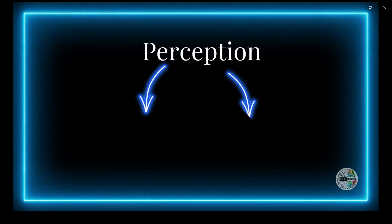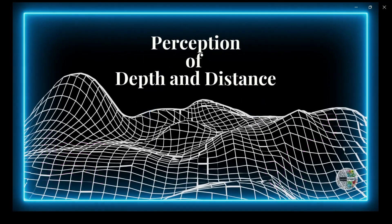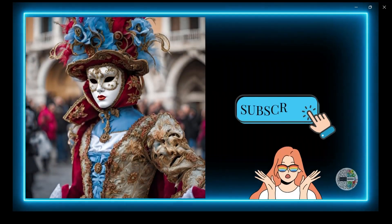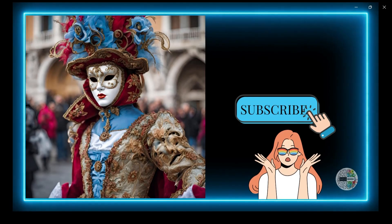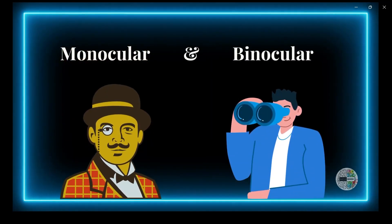In this chapter, we will focus on perception of depth and distance. Perception of depth and distance is our brain's way of figuring out how far away things are and how close or far apart they seem. Imagine you are looking at a picture with objects — the person wearing the carnival mask is in the foreground, while the building serves as the backdrop. Your brain helps you understand which things are near and which are far, using both monocular and binocular cues.